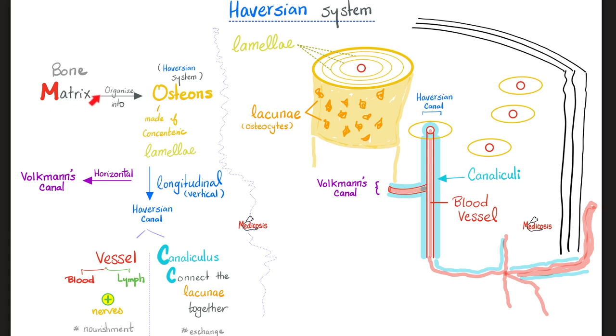But let's zoom out. Do you remember matrix and minerals? Of course I remember that. Matrix was the main part, and it can organize into osteones. And the osteones are the Haversian systems. Each osteone is made of concentric lamellae, as you see here. So here is an osteone, another osteone, a third osteone, a fourth osteone, etc.